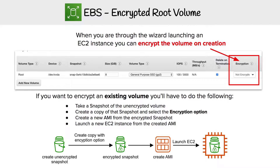Now we're taking a look at how to encrypt our root volume. When you create an EC2 instance through the launch wizard, there is a storage step. Here we can see our storage volume that's going to be our root, and we have a box where we just drop it down and encrypt it based on the method that we want.